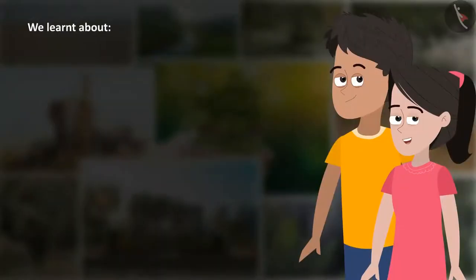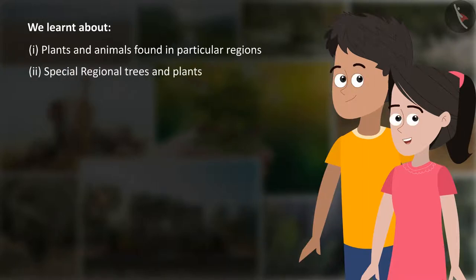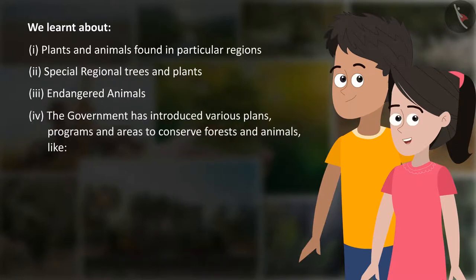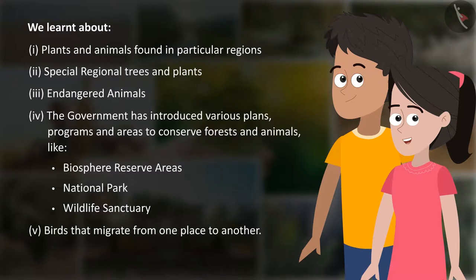We learnt about plants and animals found in particular regions, special regional trees and plants, and endangered animals. The government has introduced various programs and areas to conserve forests and animals, like Biosphere Reserve Area, National Park, Wildlife Sanctuary, and birds that migrate from one place to another.